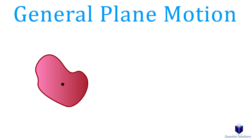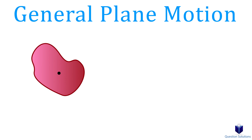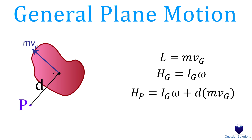Lastly, we have general plane motion. The linear momentum is still the same, and if we find the angular momentum about the center of mass, it's also the same. If we find the momentum about a random point, however, then we can write it like this. Here, d is the perpendicular distance to the linear momentum vector — pretty similar to the rotation about a fixed axis case.